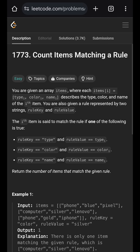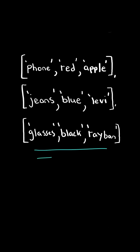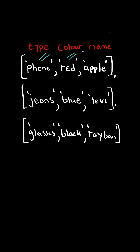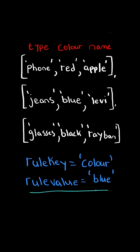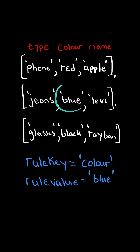Count items matching a rule. Given a list of items where each item has a type, a color, and a name, and given a rule key that denotes either type, color, or name, and a rule value that denotes the value of that key, return how many items match the given rule. In this case, there's one match.